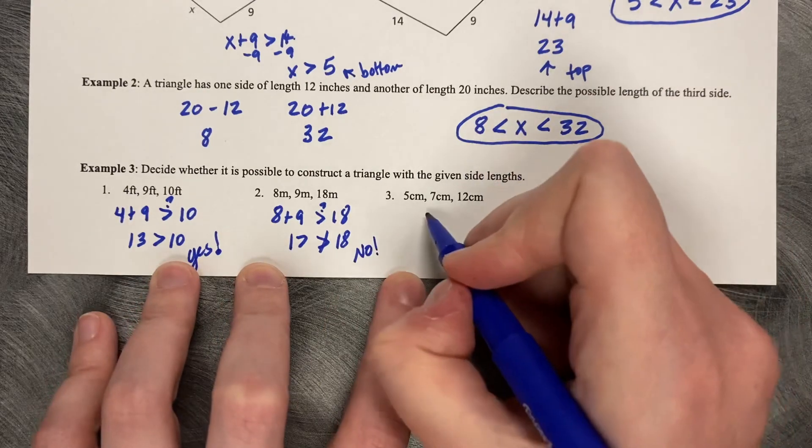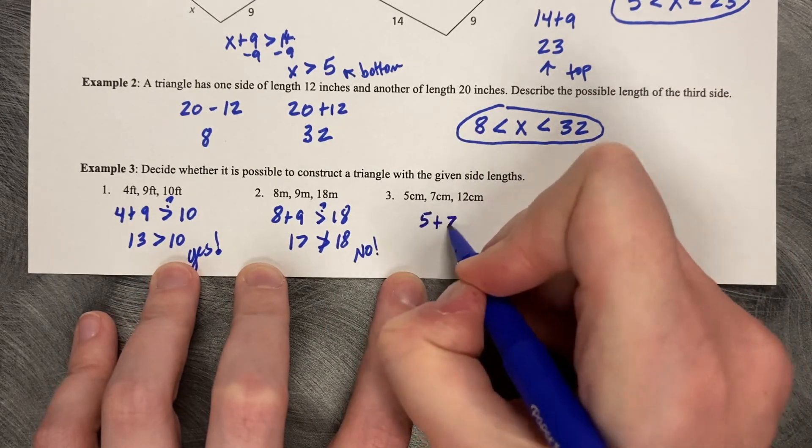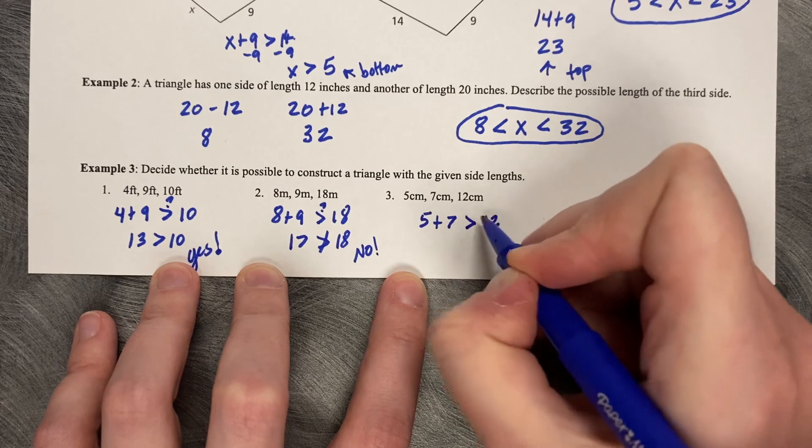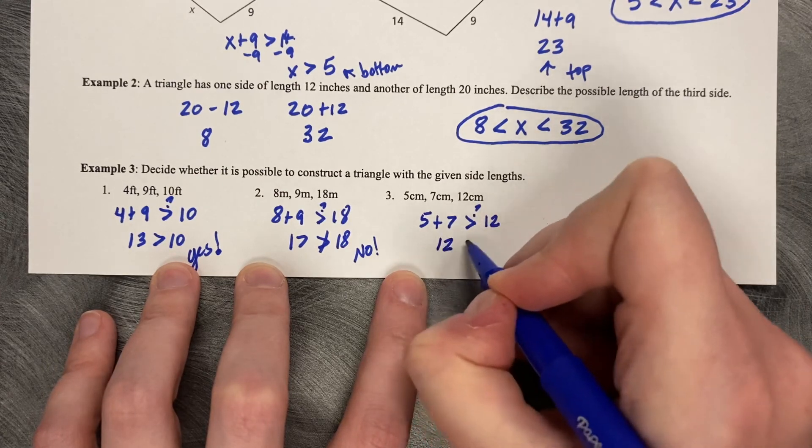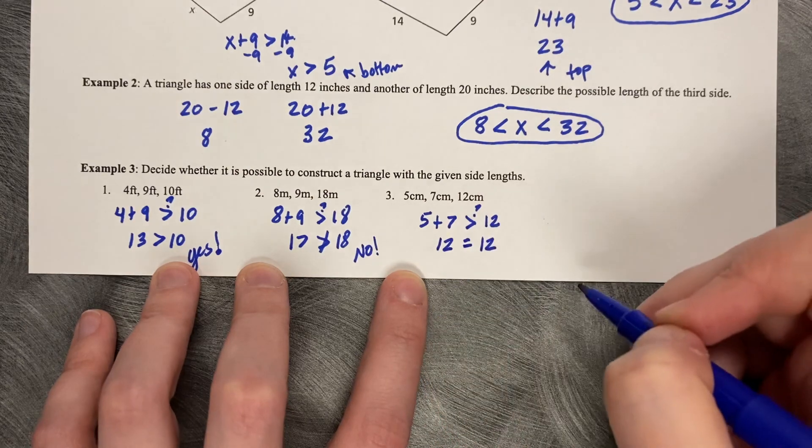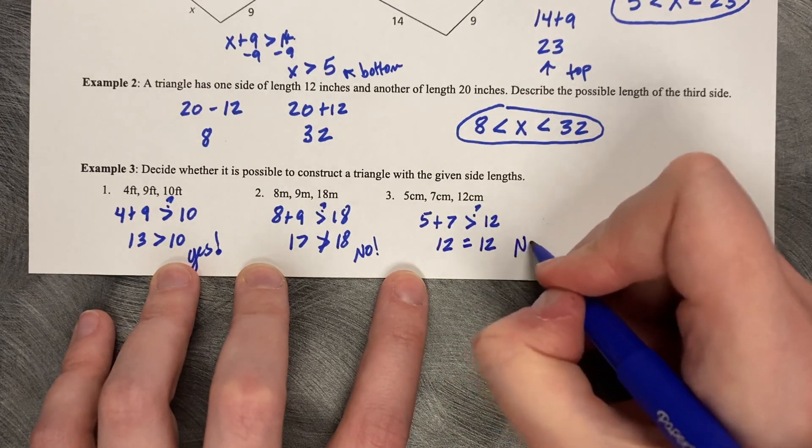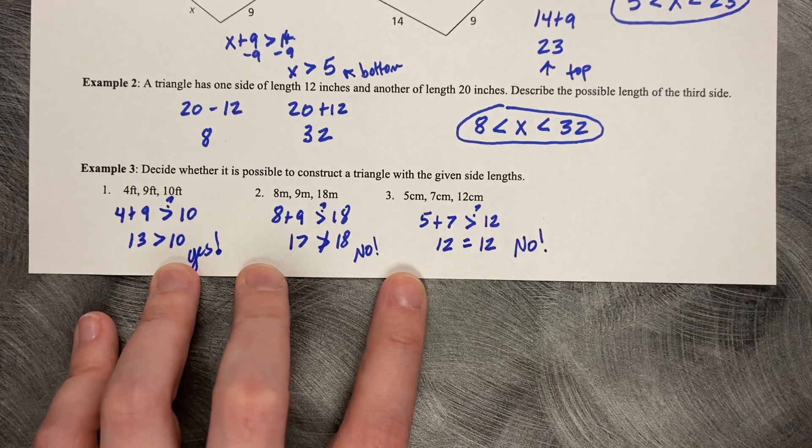How about 5, 7, and 12? 5 plus 7, is that greater than 12? No. 5 plus 7 is 12. 12 equals 12. And are they allowed to be equal in length? No. Thank you.